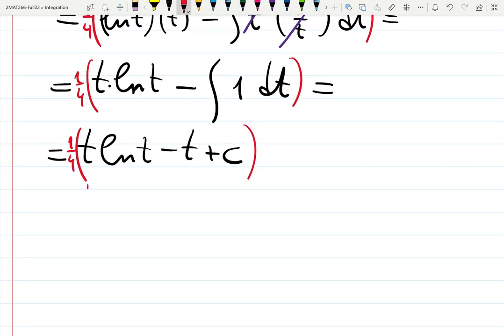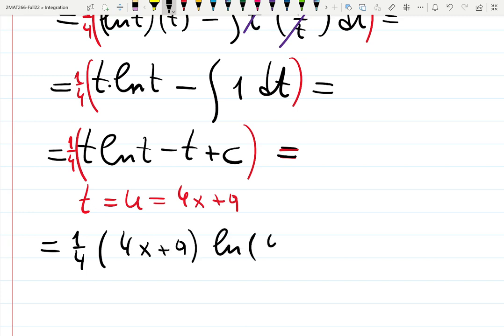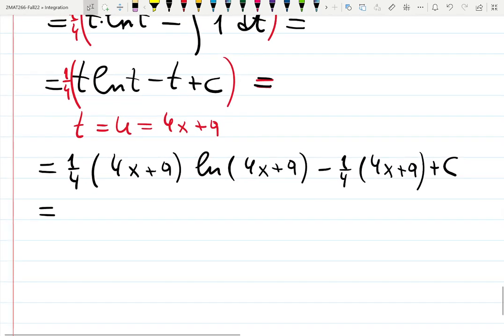Now t, which is u, which is 4x plus 9, will be inside of this answer. Let's literally substitute it back. We will have one quarter 4x plus 9 ln of 4x plus 9 minus one quarter. I'm distributing one quarter everywhere. 4x plus 9 plus c. Now this is a good final answer.